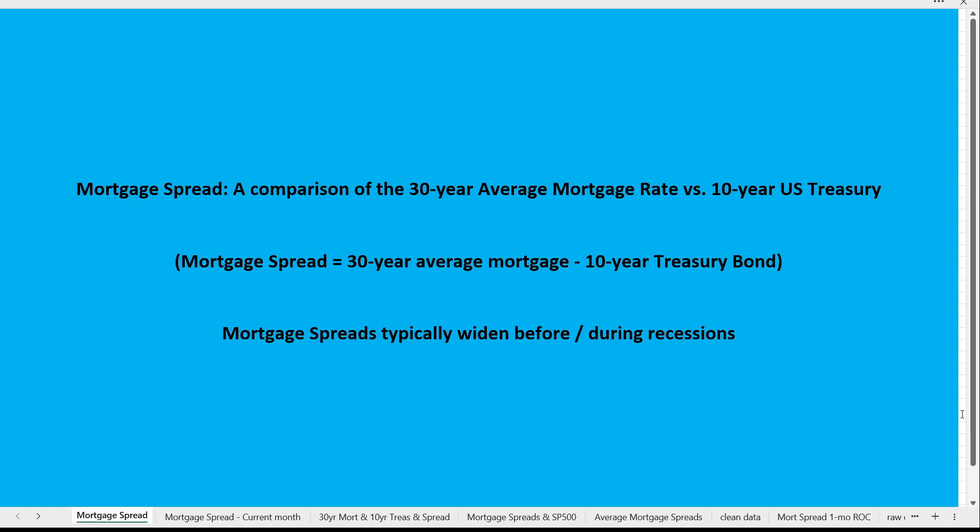As rosy as things may seem in the stock market, there is an underlying fundamental condition we cannot ignore: the mortgage spread. The mortgage spread is the comparison of the 30-year average mortgage rate to the 10-year U.S. Treasury — essentially the 30-year mortgage rate minus the 10-year Treasury yield. The 30-year mortgage is close to the 30-year Treasury bond but carries a small premium because it is a mortgage.